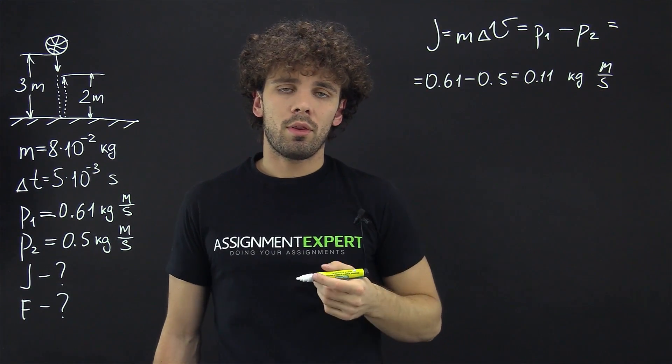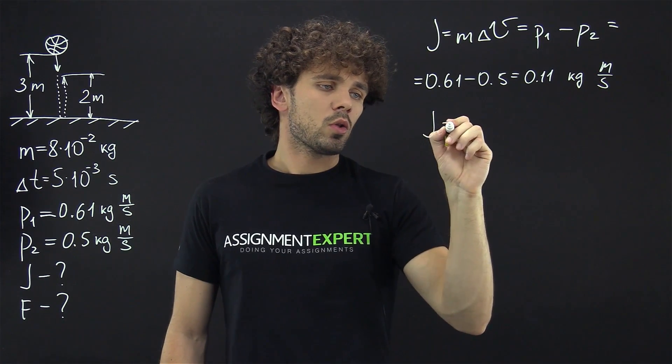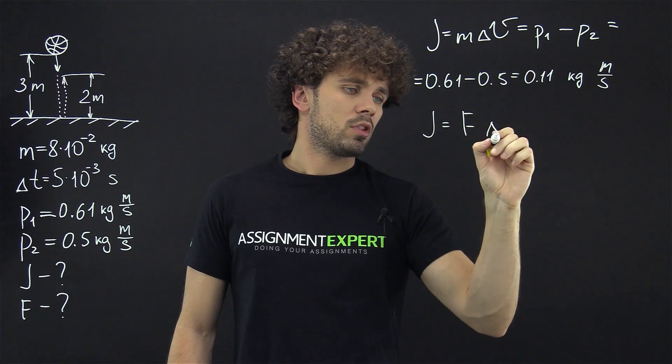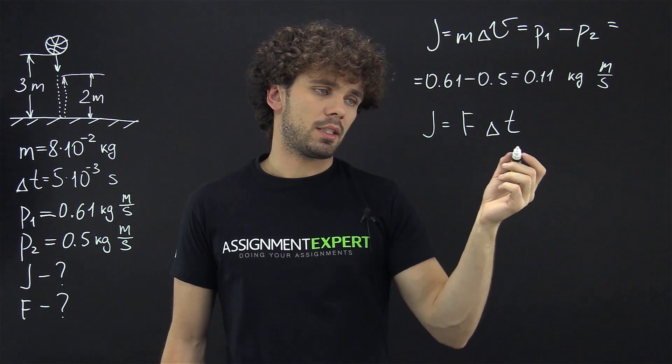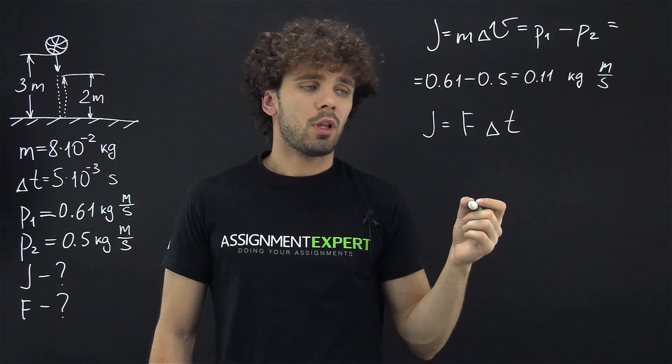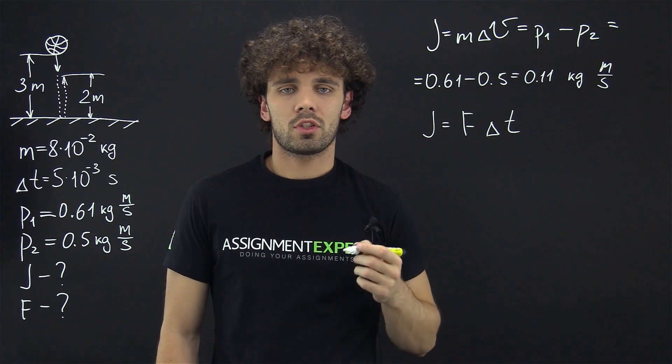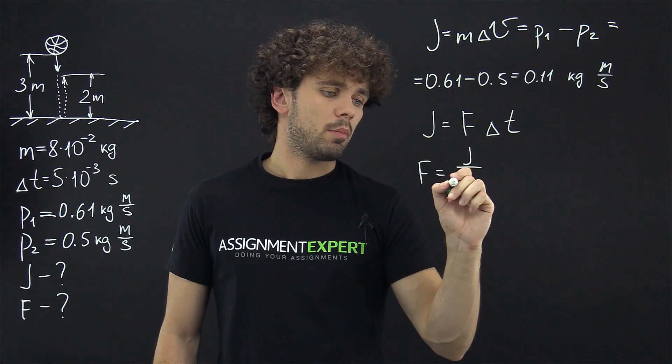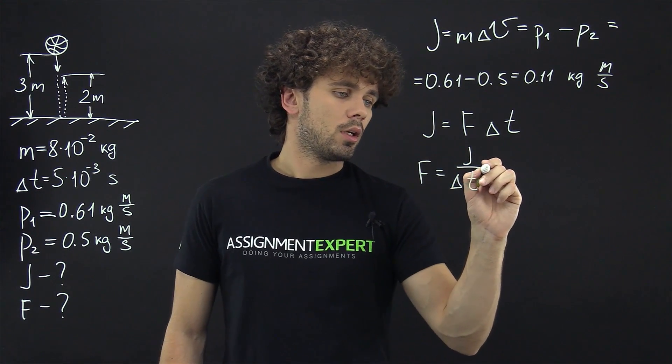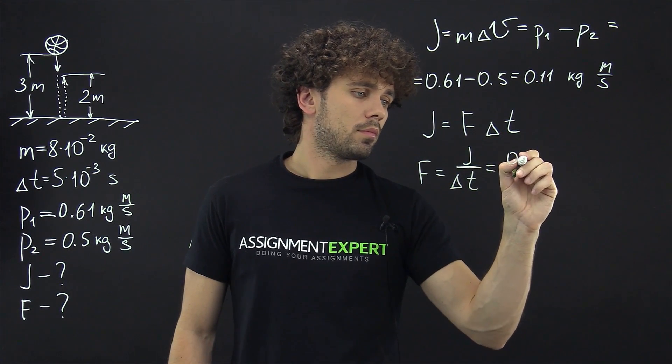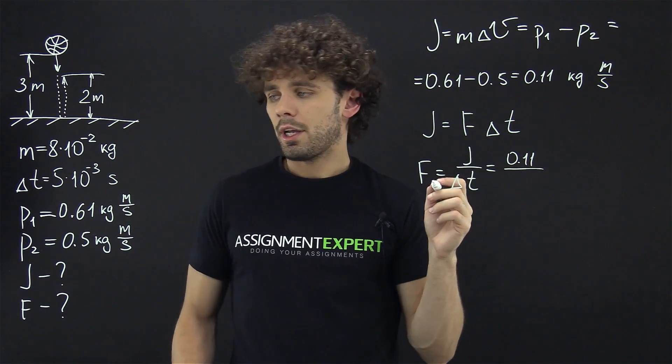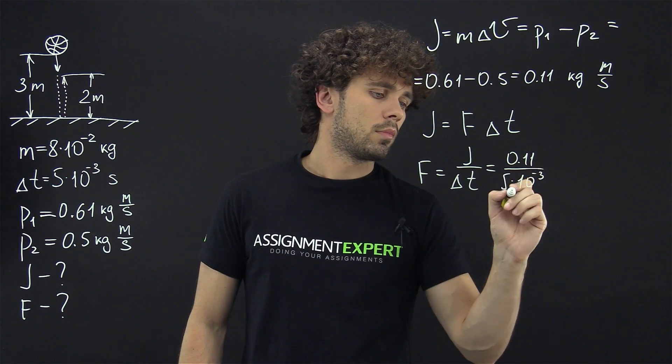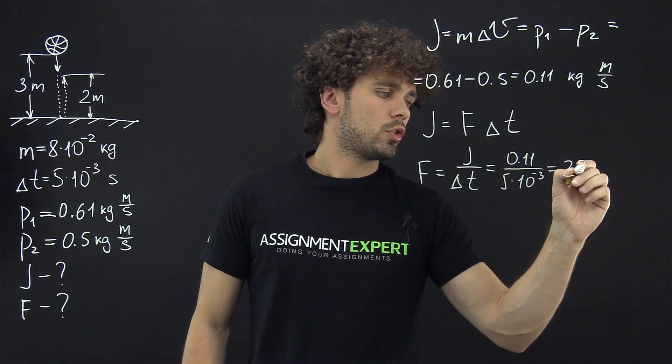Now let's recall another definition of the impulse. J also equals the average force exerted to the ball times the period of time in which this force is exerted delta t. So from this formula we can now derive the average force exerted to the ball F. And F equals J divided by delta t which is in our case 0.11 divided by 5 times 10 raised to the negative third power. And we get 22 newtons.